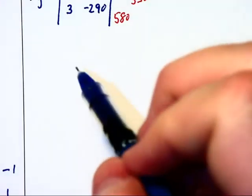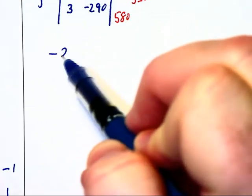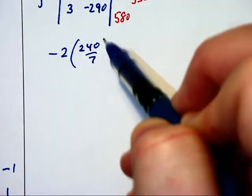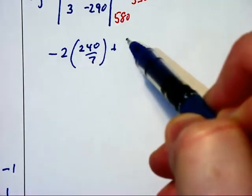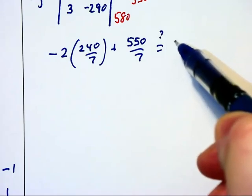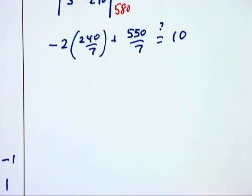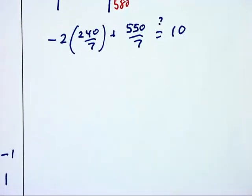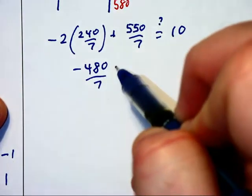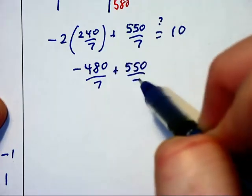So the first equation was negative 2x. So that becomes negative 2 times 240 over 7, plus y, which is 550 over 7, question mark, is that equal to 10? Yuck, we don't like that. Let's see what we've got.